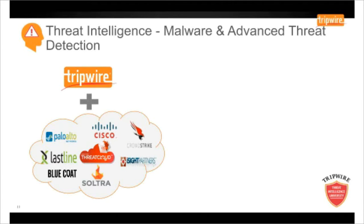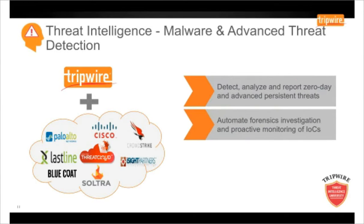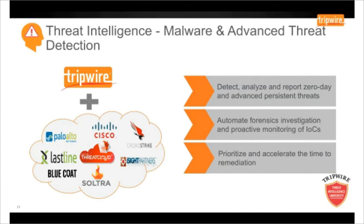With Tripwire, the integration with advanced malware analysis partners such as Cisco, Palo Alto Networks, Checkpoint, and Lastline enables real-time detection, analysis and verification of known, zero-day and advanced threats. Integration with threat intelligence indicators of compromise providers such as CrowdStrike, iSight Partners, and Sultra enables proactive monitoring as well as forensic capability for any previous compromises — helping customers answer the question: have I been compromised and how long have I had this? With Tripwire's business context combined with threat intelligence integration, customers can now prioritise and accelerate their time to detect and remediate known and zero-day advanced threats across their networks.